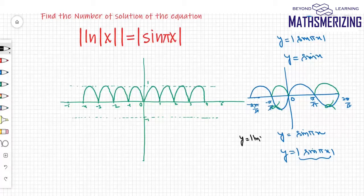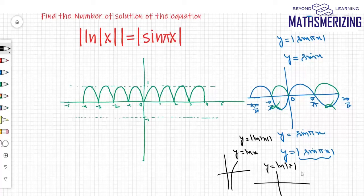Now for |ln|x||, my basic graph is ln(x). Then I'll take the transformation of |ln|x||. So now I'll draw the graph of |ln|x||.